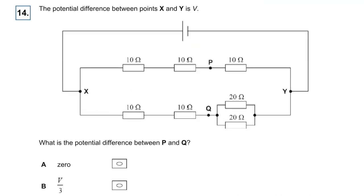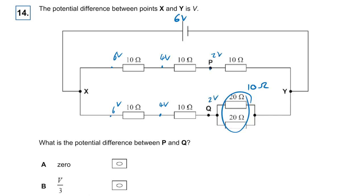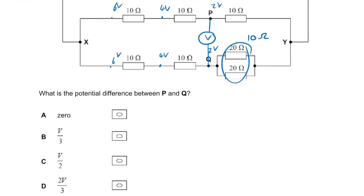Question fourteen: two 20-ohm resistors in parallel combine to make 10 ohms. What is the potential difference between P and Q? All resistors are equal so we're losing two volts every step. The potential at P is two volts and at Q is also two volts, making the potential difference zero. The answer is zero — what a strange question.